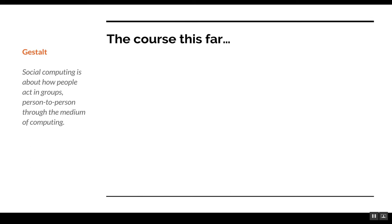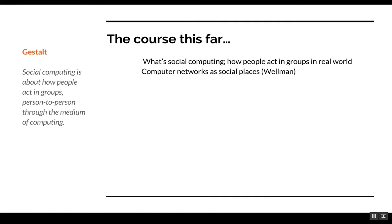Here's the gestalt. What we've done so far is talk about what social computing is, how people work together in groups, and how they interact socially. We came up with the idea that computer networks and social networks can really be social places. Remember the work of Wellman? We came up with the idea of social capital as generated through social networks. We talked about bridging capital and so on. I'm bringing this to mind because we'll be talking about some of these ideas today.